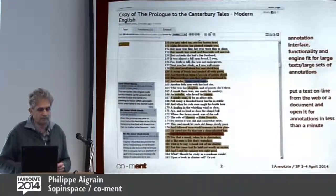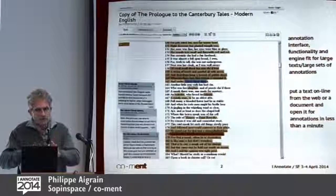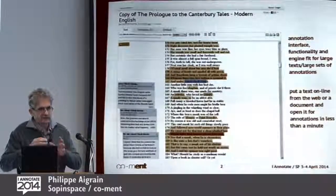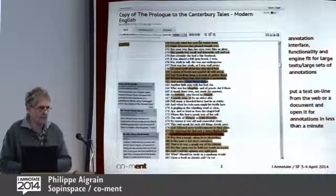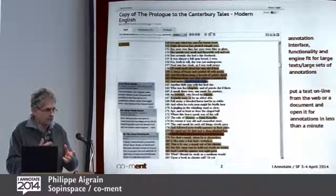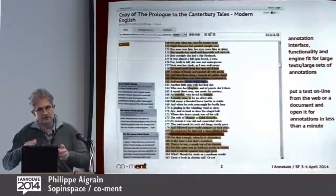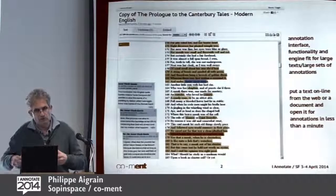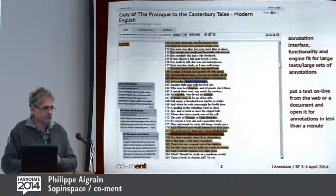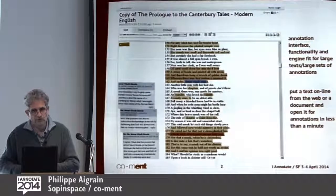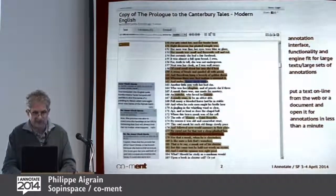Two-thirds of that progress came from Moore's Law and improvements in browser performance, but one-third came from our own efforts. Coman is derived from a tool called STEP, used for the revision of the General Public License — one of the main licenses for open source software. With that tool, you had to work a whole day to make a text ready for annotation. Our idea was to make it symmetrical: we want anyone to be able to submit a text for annotation as easily and as fast as one can create an annotation.